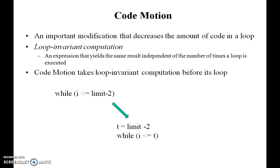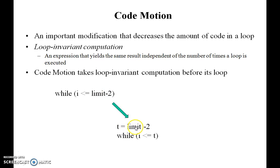The next one is code motion, which is particularly about loop optimization. Inside the loop optimization, for example, while calling a condition where i is greater than or equal to limit minus 2, inside that loop we are calling some conditions and giving some expressions. But we have to avoid this kind of calculation inside the loop. Instead of the expression inside the loop, we just do the calculation outside the loop and simply compare that particular value. Through this kind of loop optimization, the efficiency of the compiler will be improved.